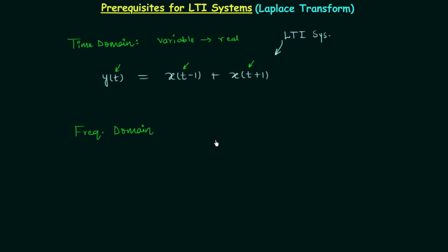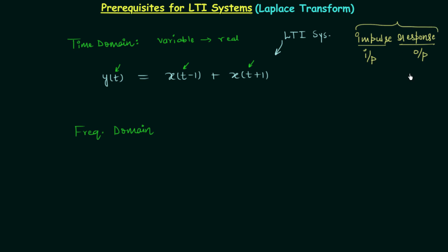To comment about the other properties of the LTI system we need the impulse response. The impulse response is used to define the LTI system. The response means the output and impulse means the input — when you feed the impulse as the input to the LTI system you get some output, and this output is the impulse response. It is difficult to obtain the impulse response in time domain, so we want to go to frequency domain, and the tool to do that is the Laplace transform.